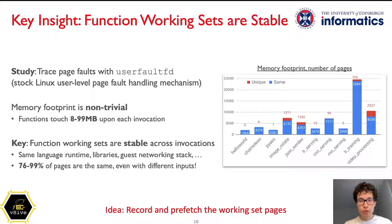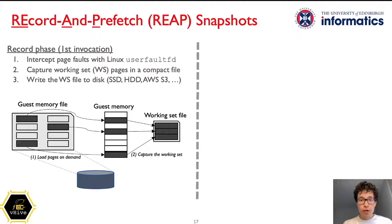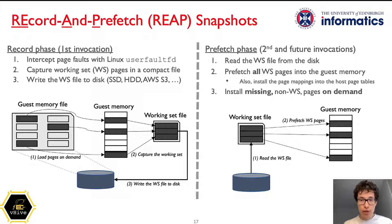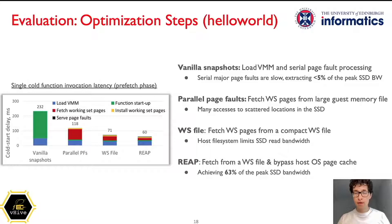This takes us to a simple yet powerful idea of recording and prefetching the working set of functions upon a cold start. Our record-and-prefetch solution, called REAP Snapshots, consists of two phases. First is the record phase: upon the very first invocation, the system intercepts page faults and loads pages into guest memory on demand, while at the same time capturing these pages as the function working set. After invocation processing is finished, the captured working set is written back to storage. All invocations after the first one enjoy the expedited prefetch phase: the entire working set file is read from storage, then all pages are installed eagerly into guest memory. This avoids the bulk of page faults, except for rare accesses to pages outside the working set that are still retrieved from storage on demand. REAP Snapshots accelerate all cold starts after the first invocation at the cost of a little extra storage.